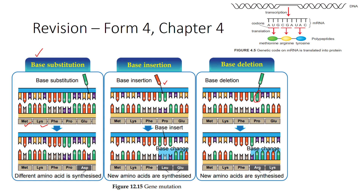For example, consider amino acids such as methionine, lysine, phenylalanine, proline, and glutamic acid. If base substitution occurs — for example, guanine substituting thymine — the base pair changes. This results in a different amino acid being synthesized: aspartic acid instead of glutamic acid. This change in amino acid is what we call mutation.